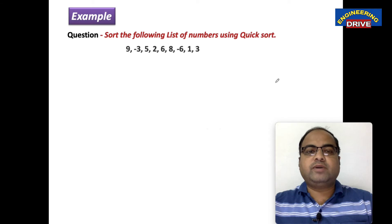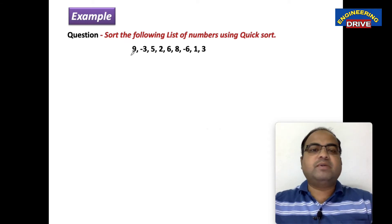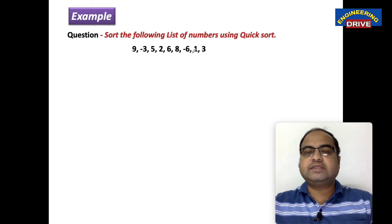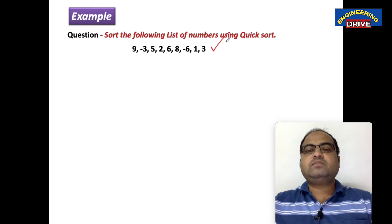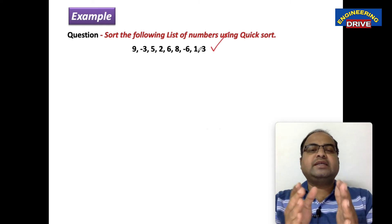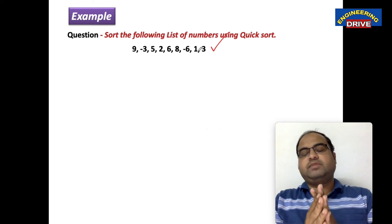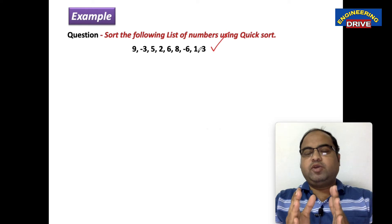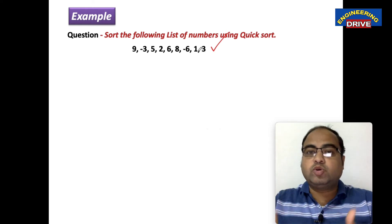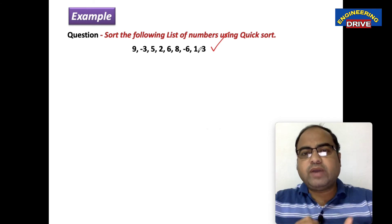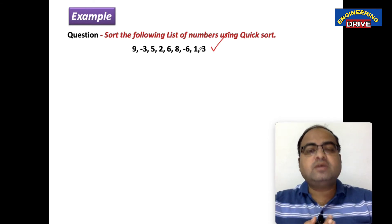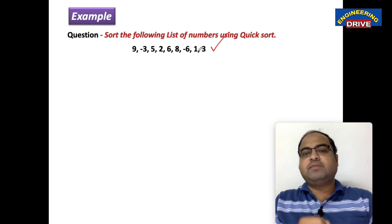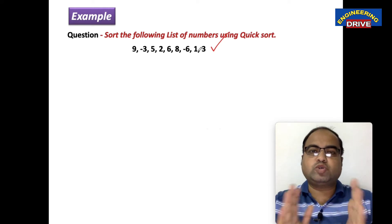So let me show you the problem. These are the set of numbers: 9, -3, 5, 2, 6, 8, -6, 1, 3. It contains even negative values this time. Intentionally I have taken negative values also to give you an idea about what to do, because some students will have doubts about how to solve if negative values are asked. So for that practical reason I have taken this example.